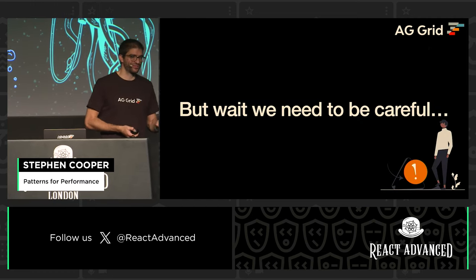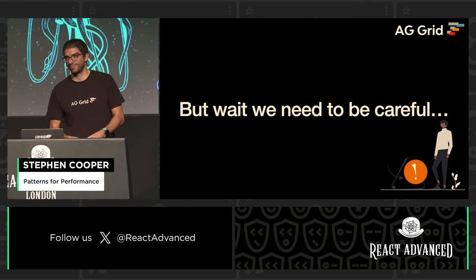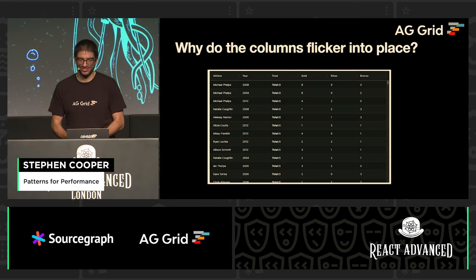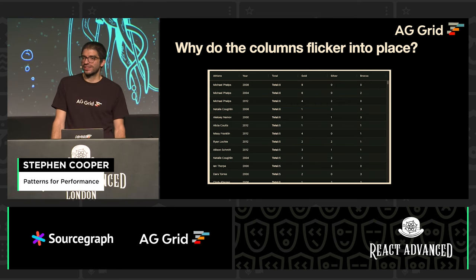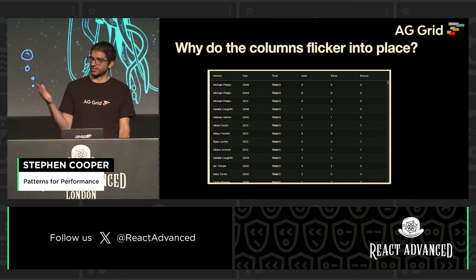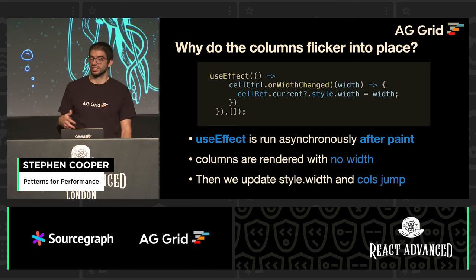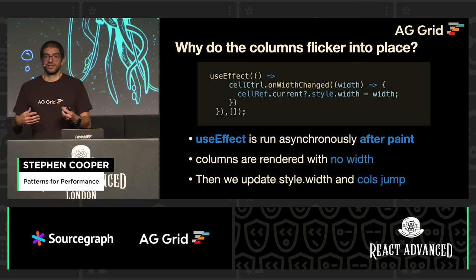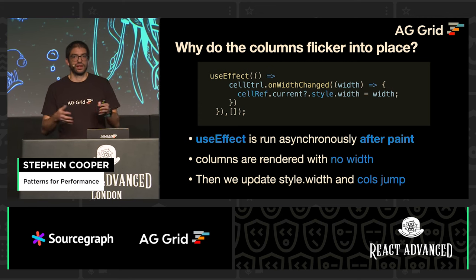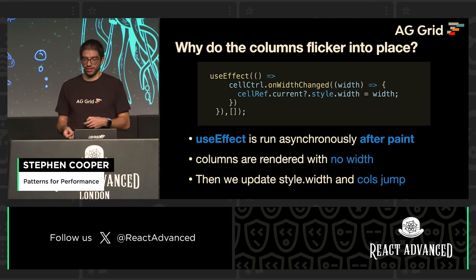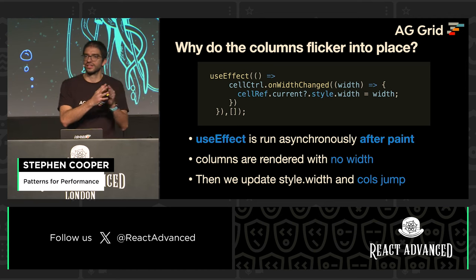But we need to be careful — the code we've shown so far actually has a pretty big bug. We made these changes, but then suddenly the columns start flickering into place. You load up your grid and you can see all of them are overlaid over the first one. What's happening is that we're using an effect, and an effect runs asynchronously after the browser has painted. So React is rendering all our columns, painting them to the browser, and then running the effect — which then comes in and changes the style directly — which is why we've got columns all in one place and then suddenly they jump.